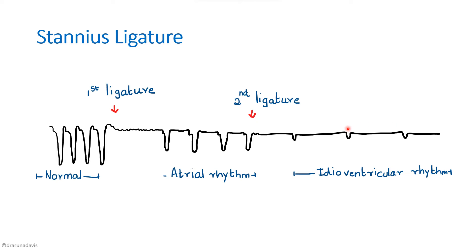This very slow ventricular rhythm is called the idioventricular rhythm, at about 10 beats per minute. The recording at this stage contains only the ventricular component, unlike the atrial rhythm which has both atrial and ventricular components. From this experiment, we can prove that the sinus venosus, atria, and ventricles can each contract at their own rhythm. However, the sinus venosus is the pacemaker because its impulse production rate is higher than that of the atria and the ventricles.